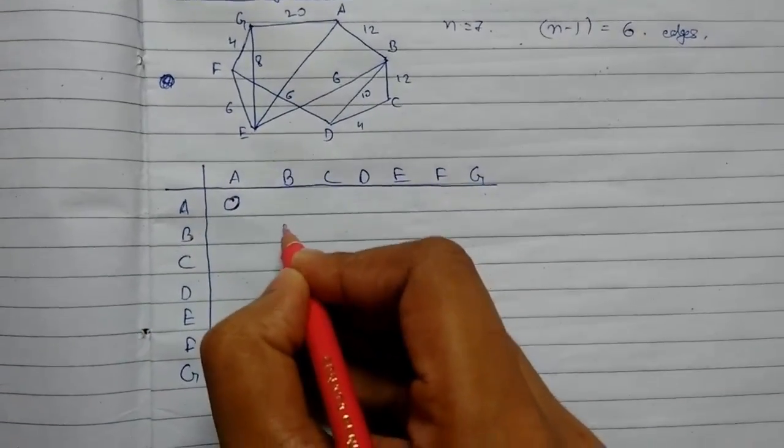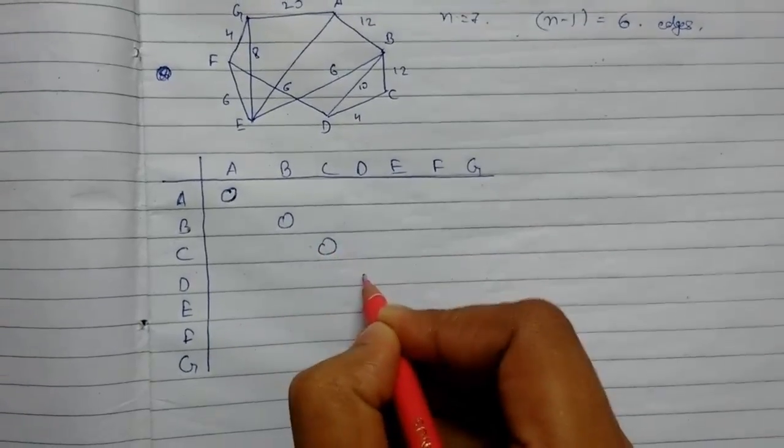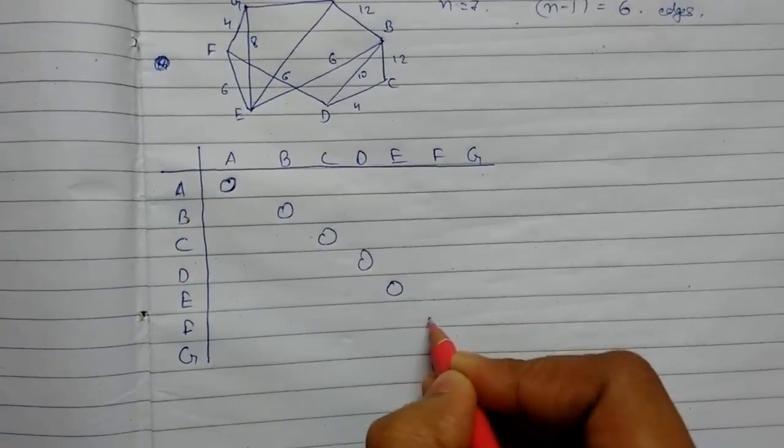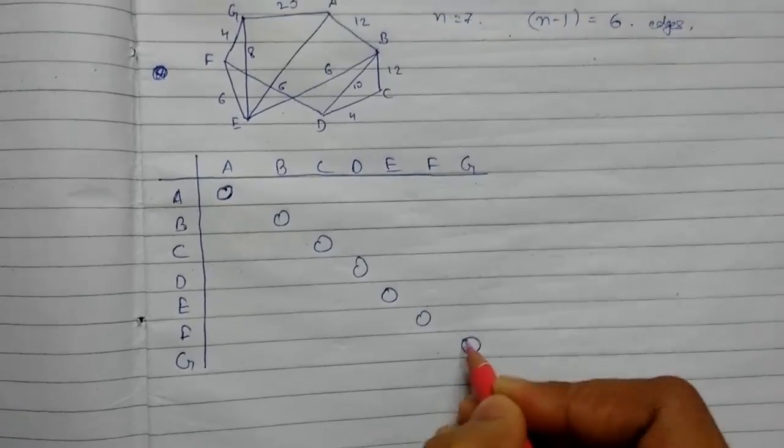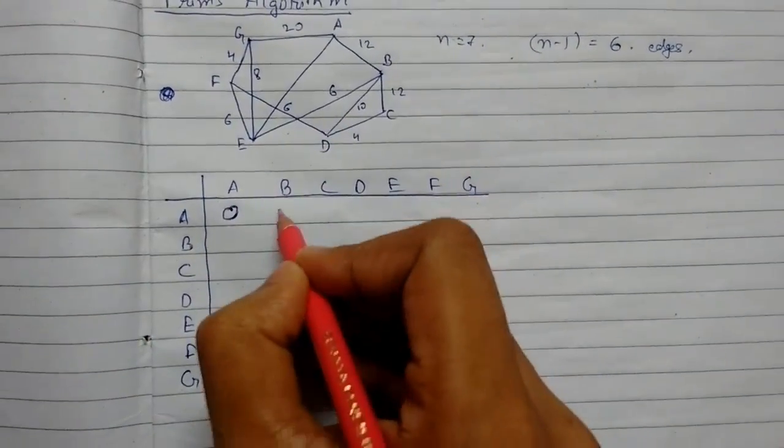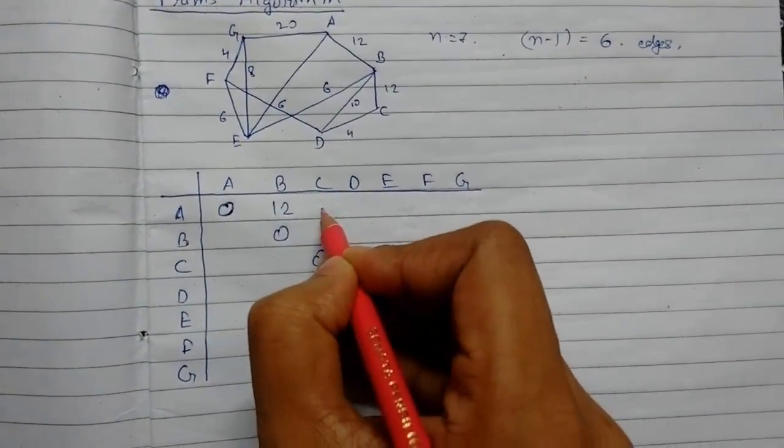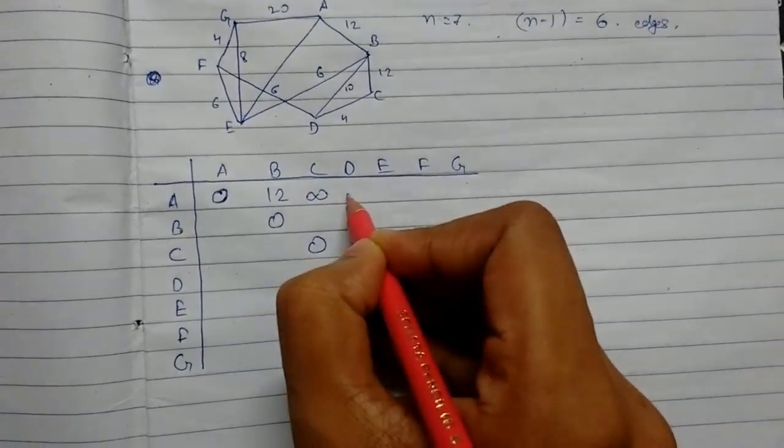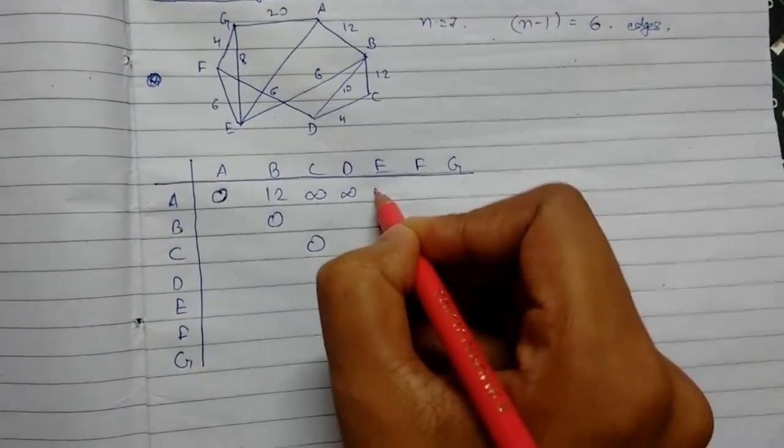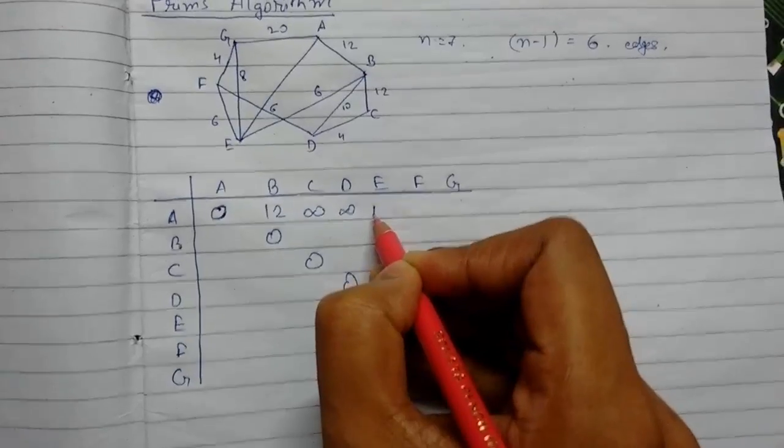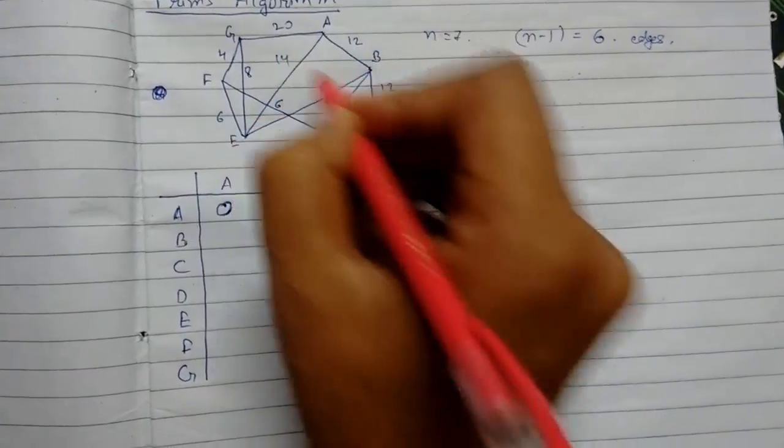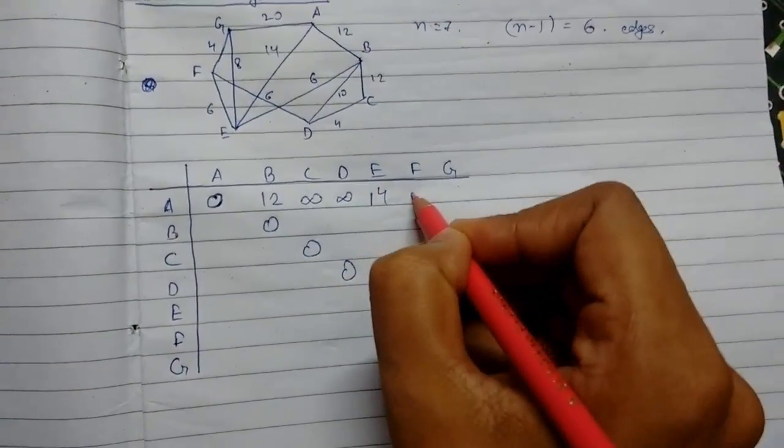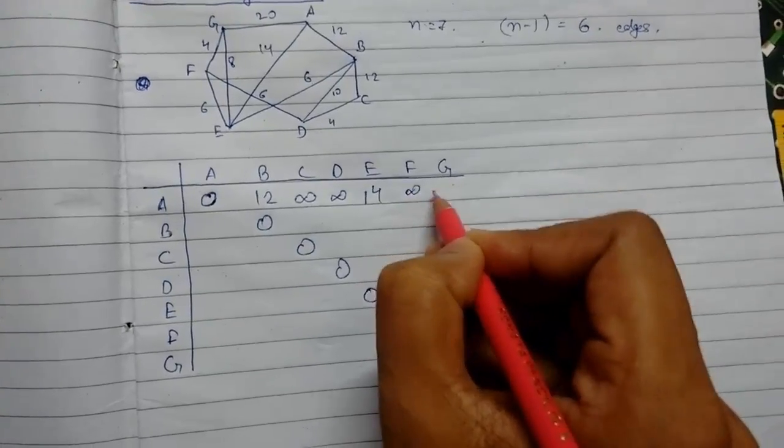So now from A to B that is 12, A to C no path connected that is infinity, A to D infinity, A to E this was just 14 so this will be 14, A to F is infinity, A to G is 20.